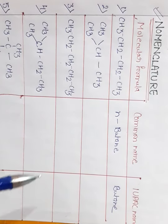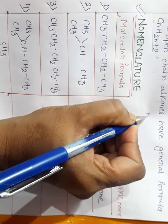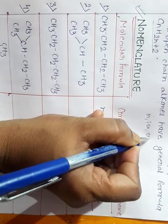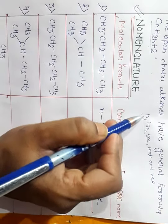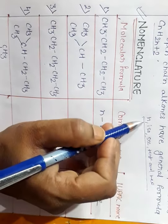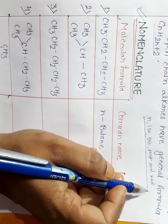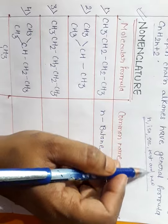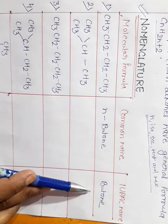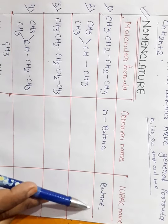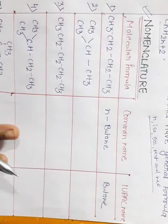When we write common names of compounds, we use the prefixes: normal, iso, sec, tert, and neo. But in the IUPAC system, we use numerals — 1, 2, 3 — to indicate positions, and then we name the compound accordingly.